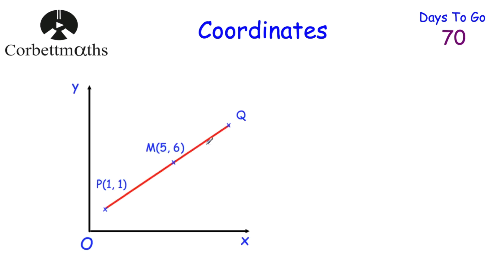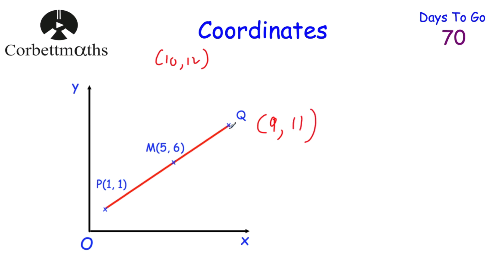Here we've got points P, M, and Q on a grid, where M is the midpoint of PQ. We need to find the coordinates of point Q. One approach: since adding coordinates and halving gives the midpoint, we can double the midpoint coordinates — that gives us ten, twelve. This means P's coordinates plus Q's coordinates must equal ten, twelve. P is one, one, so Q must be nine, eleven. Let's check: one plus nine is ten, halved is five — correct. One plus eleven is twelve, halved is six — correct.